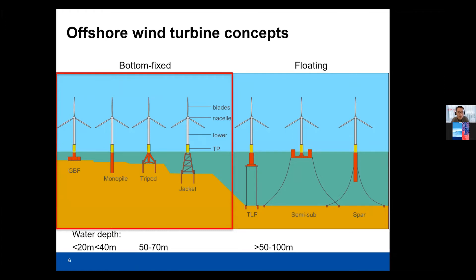When it comes to offshore wind turbines, I'm not sure everyone is familiar with the different types of support structures. Generally speaking, offshore wind turbines can be divided into two categories. The first is called bottom-fixed wind turbines, where the base is connected to the seabed. When water depth is not too great, wind turbines can be connected to the seabed in a cost-efficient manner. But when water depth increases — normally beyond 100 meters — floating wind turbines are believed to be more cost-effective compared to bottom-fixed counterparts.